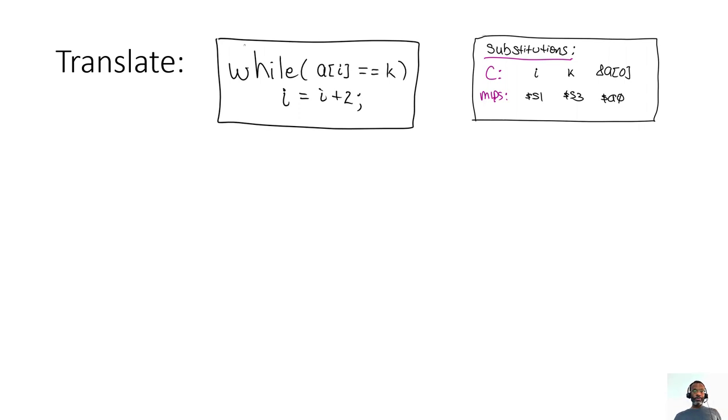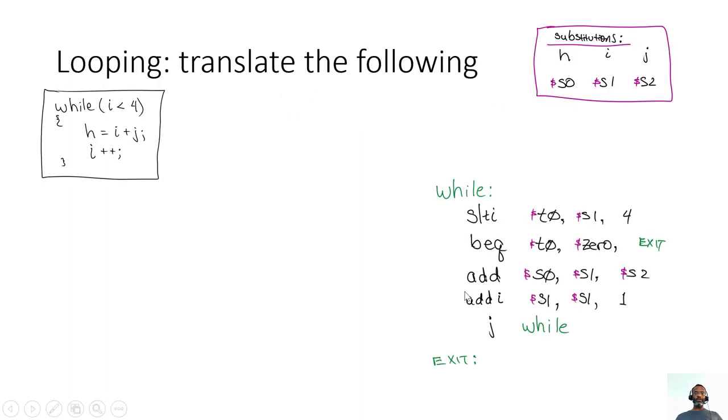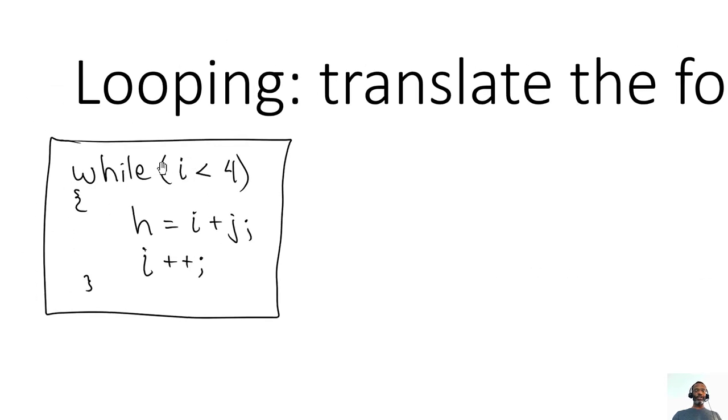All right, so in the previous video clip we had a chance to see how we can do simple loops. We saw how we can do a simple comparison and then we could jump based on the results of that comparison, and it could be an inequality or an equality. We could check to see if i is equal to 4, i is not equal to 4, i less than 4, or i greater than or equal to 4.